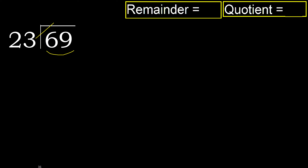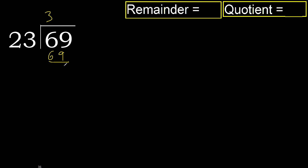But not greater — 23 multiplied by 4 is greater. 23 multiplied by 3 is 69, which is not greater. Subtract: remainder is 0. Next.